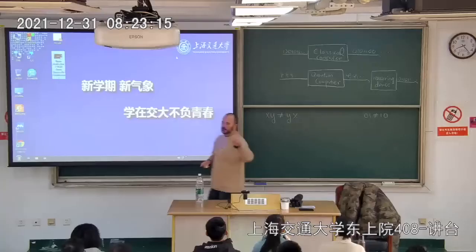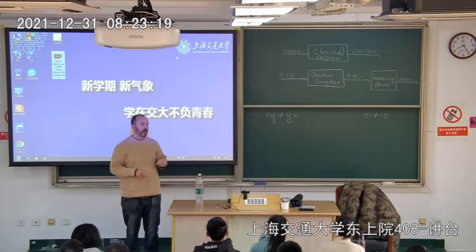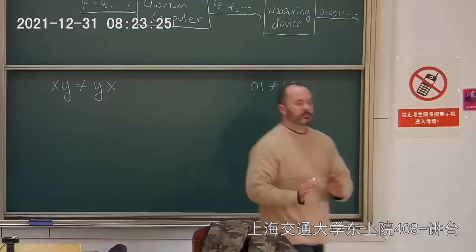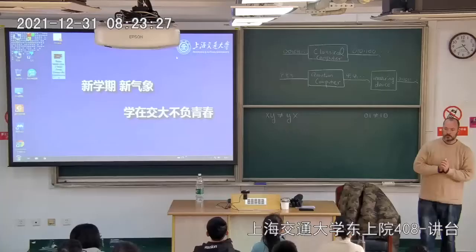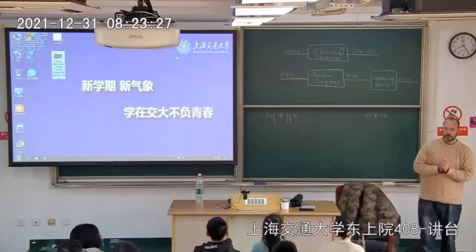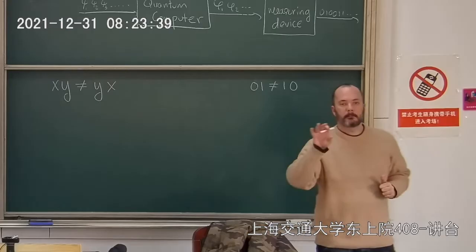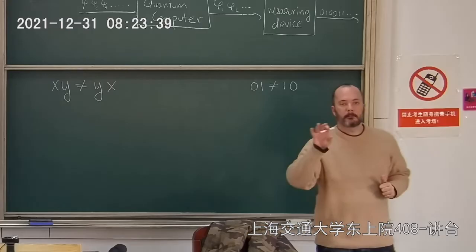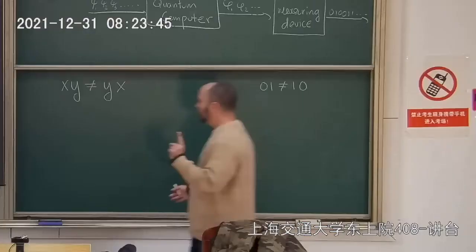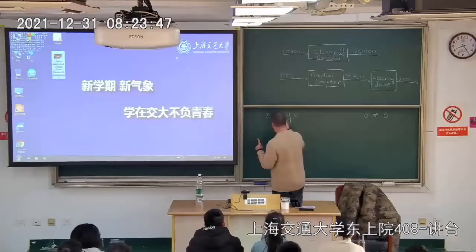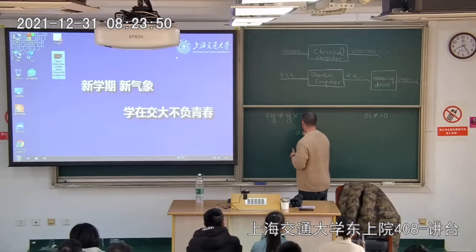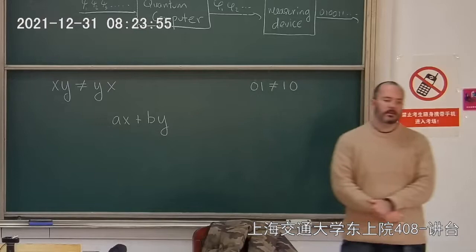Let's say I have a degree-one homogeneous polynomial in x and y, meaning every monomial has the same degree. A general homogeneous degree-one polynomial is of the form a times x plus b times y.